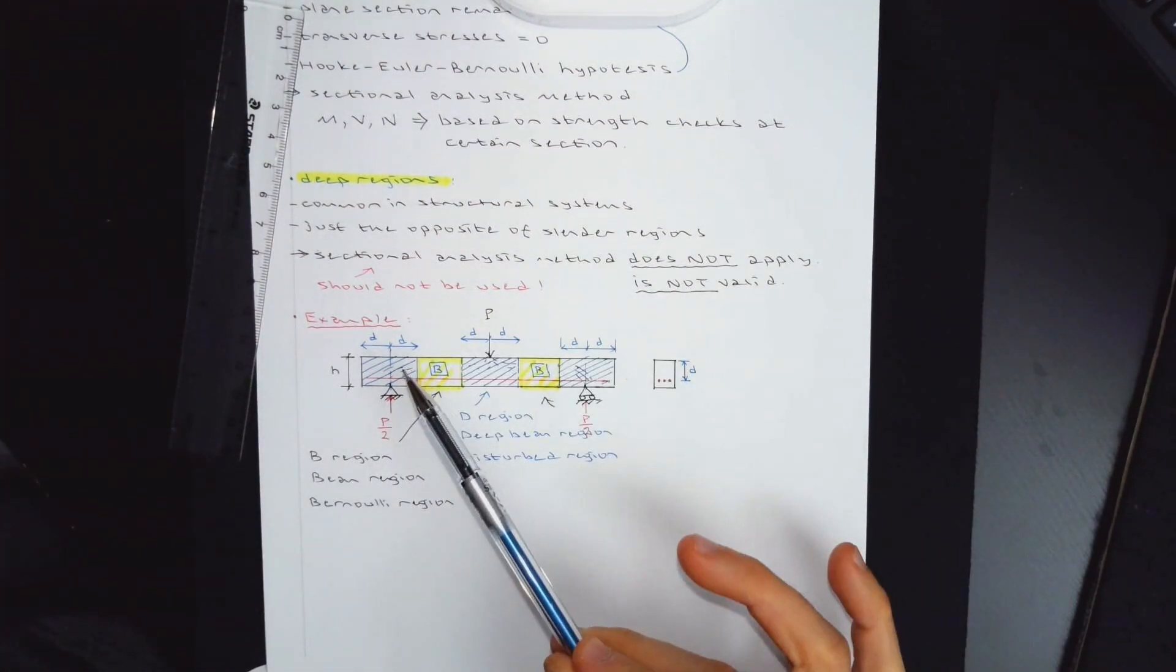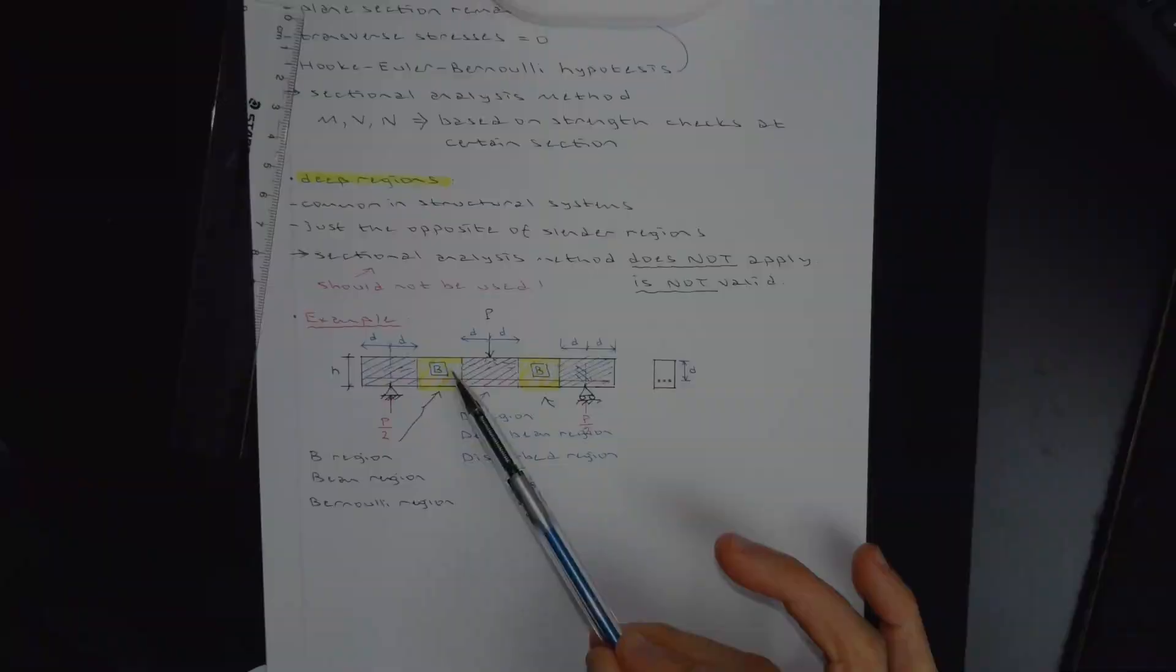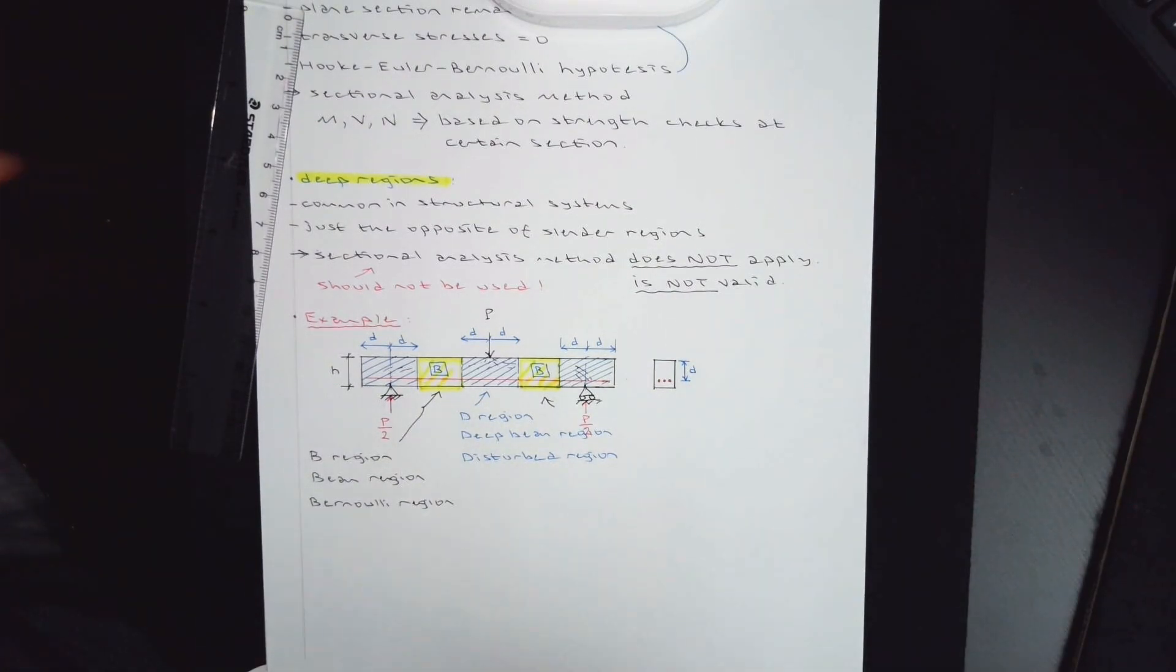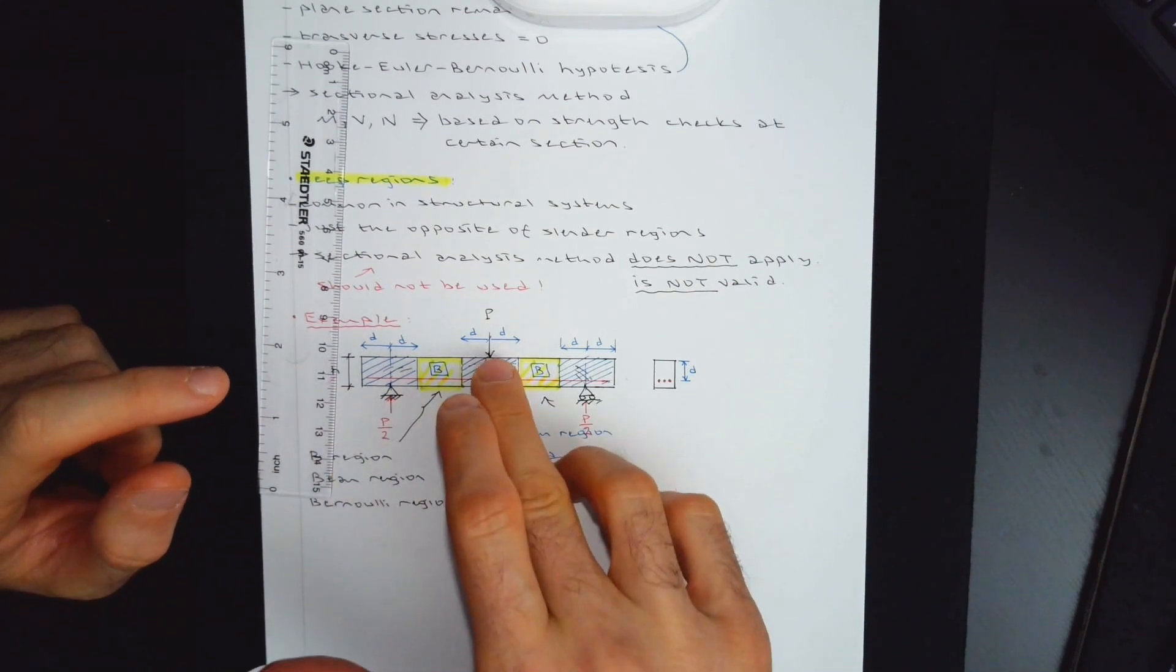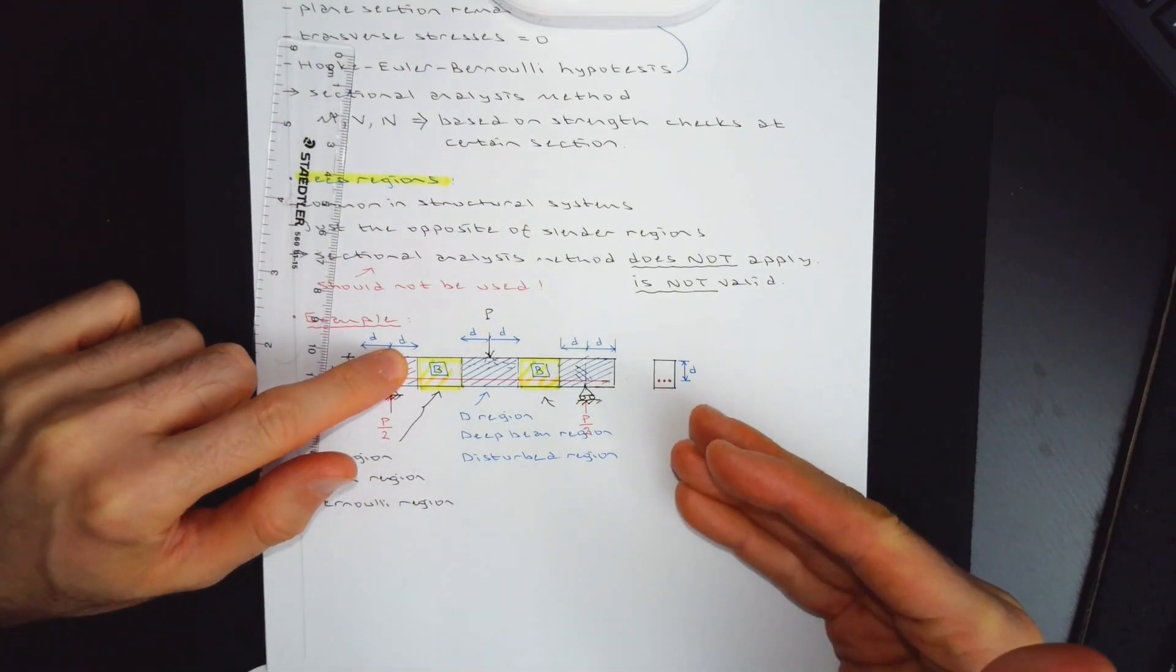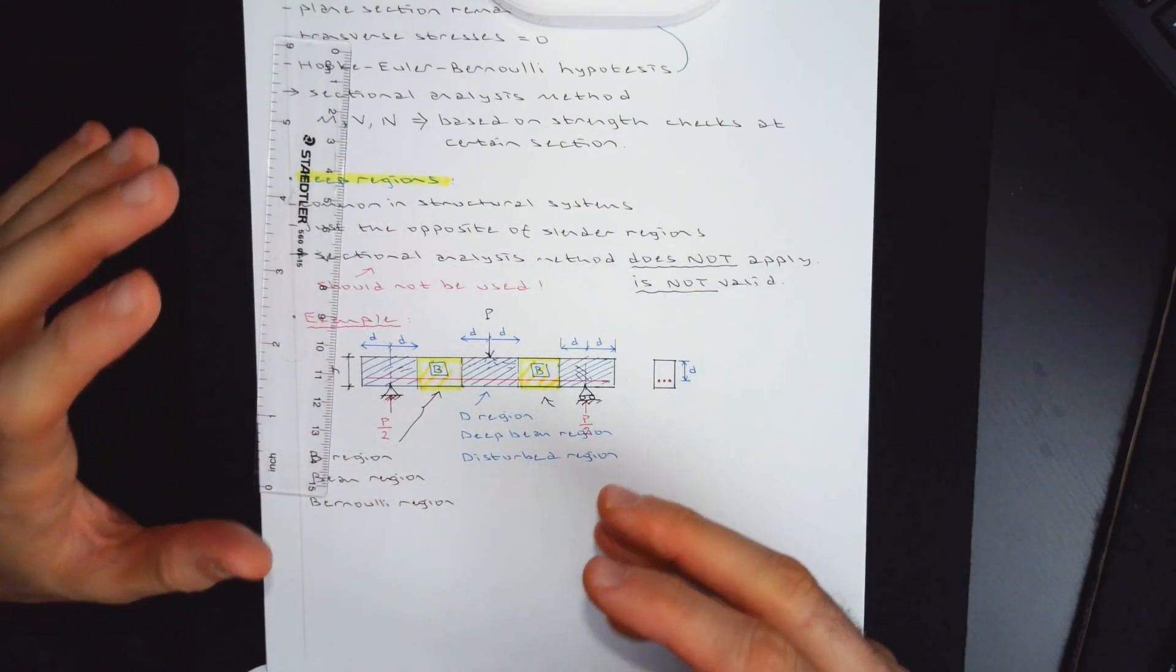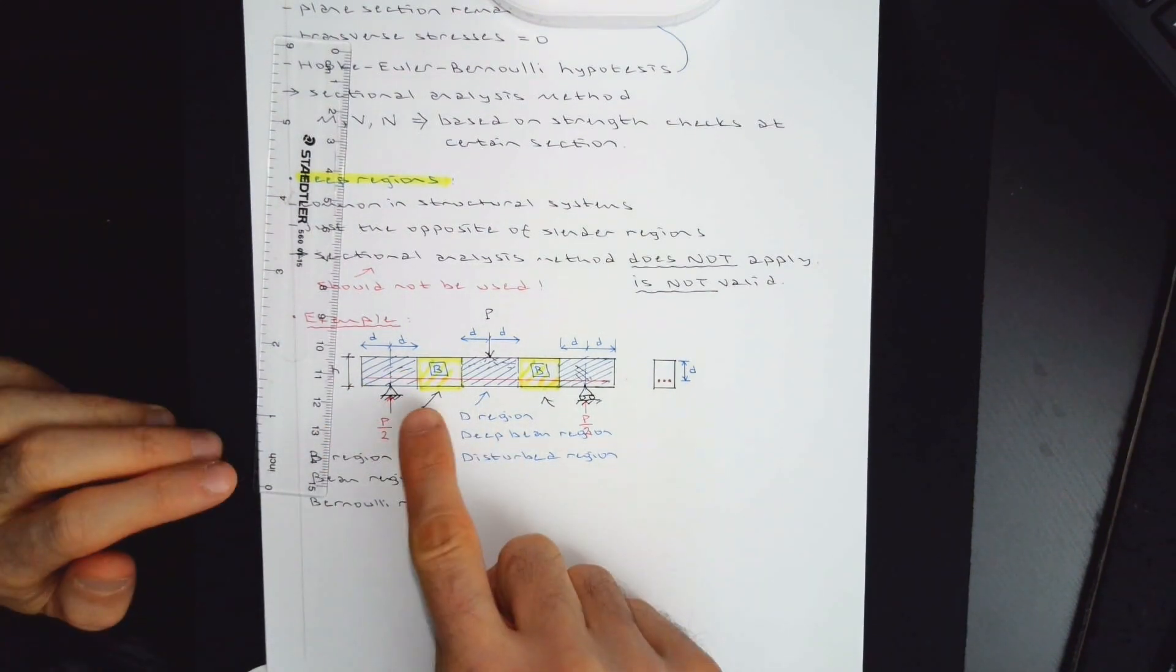This is b region. This is b region. If you look at this beam, the percentage of d regions are larger than the percentage of b regions. When you are using design codes, whether it's ACI, CSA, Eurocode, New Zealand, Japanese and so on, those codes will always make you check stuff a certain distance away from the support, away from the point load. Because this region is a disturbed region, you shouldn't be applying your sectional method in that region.